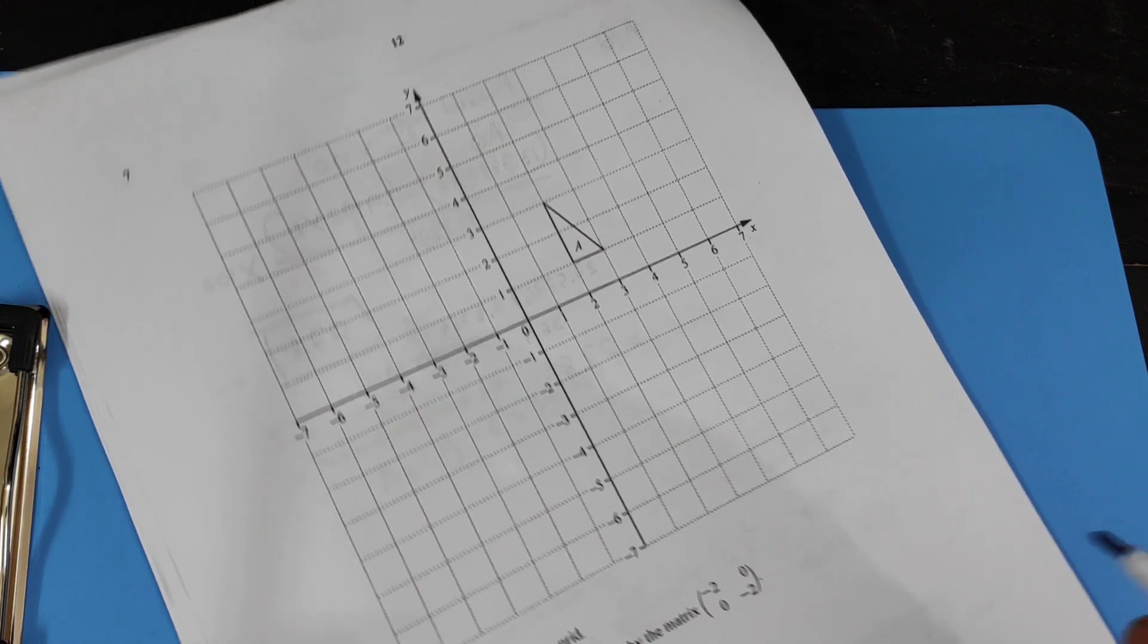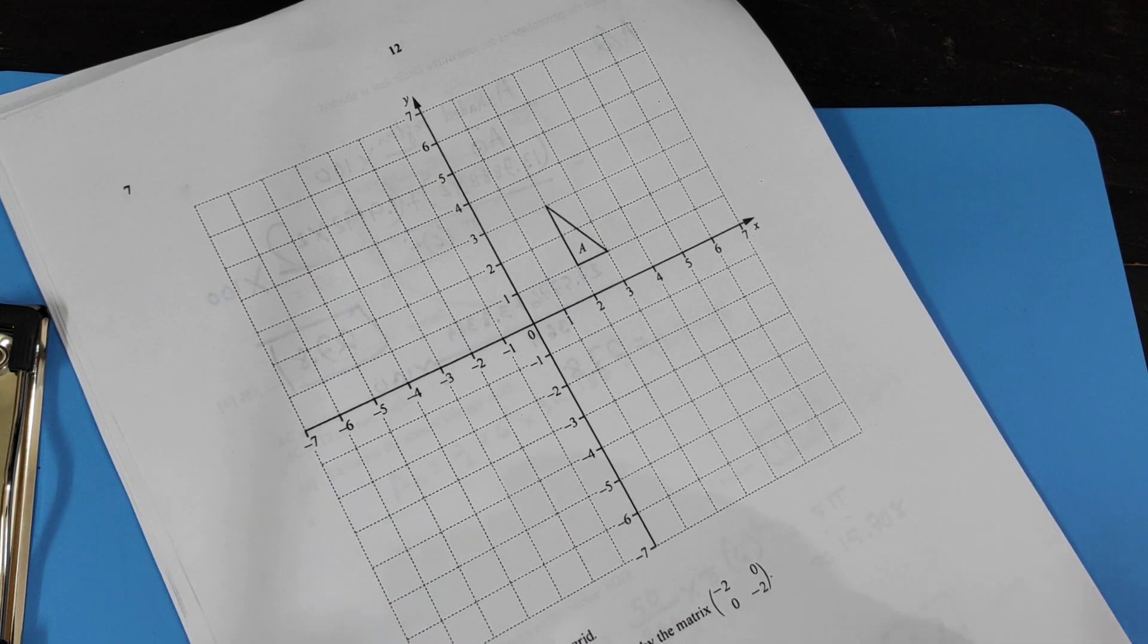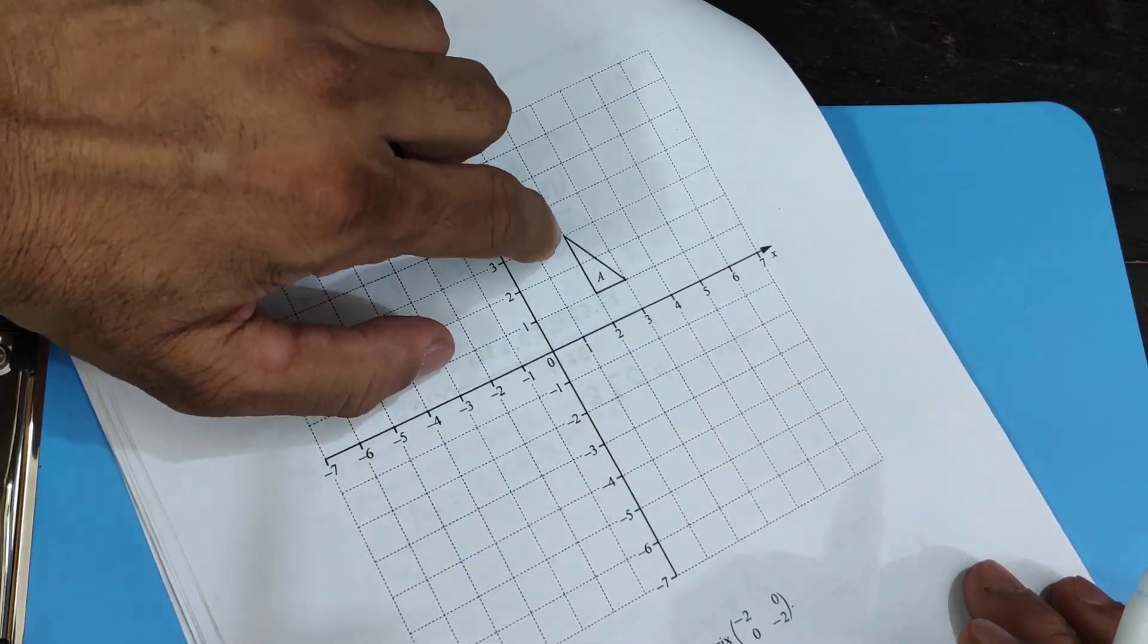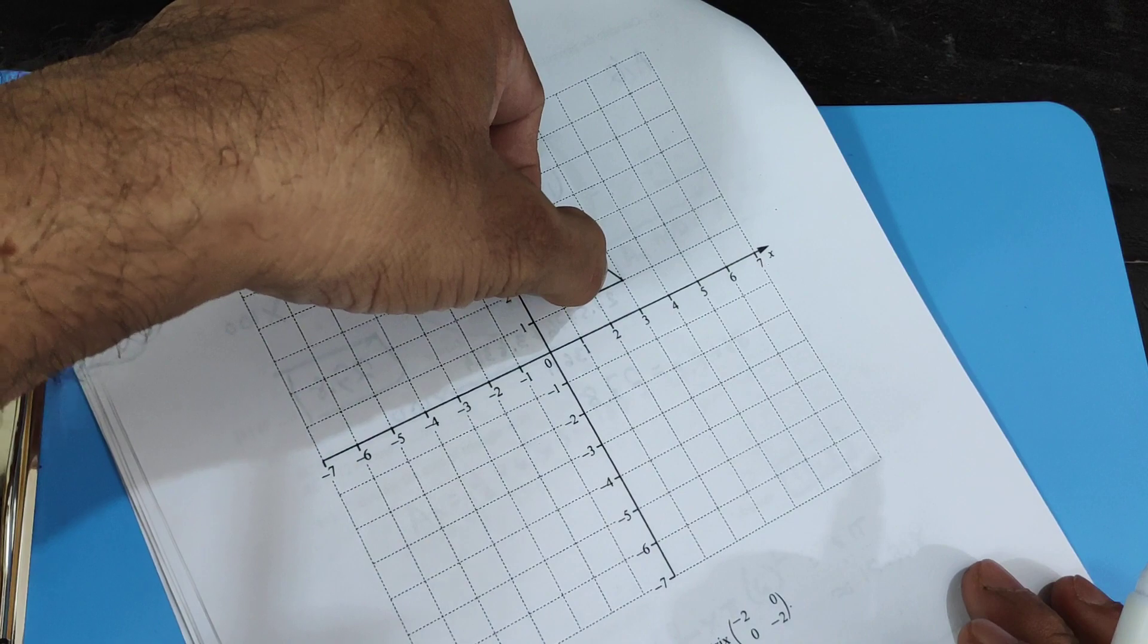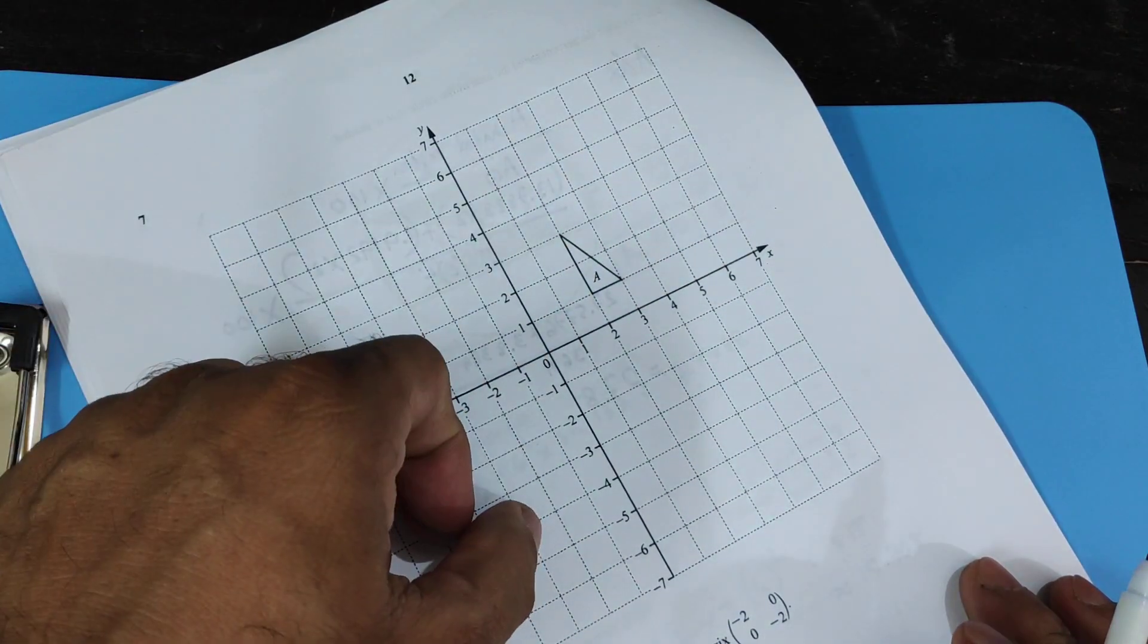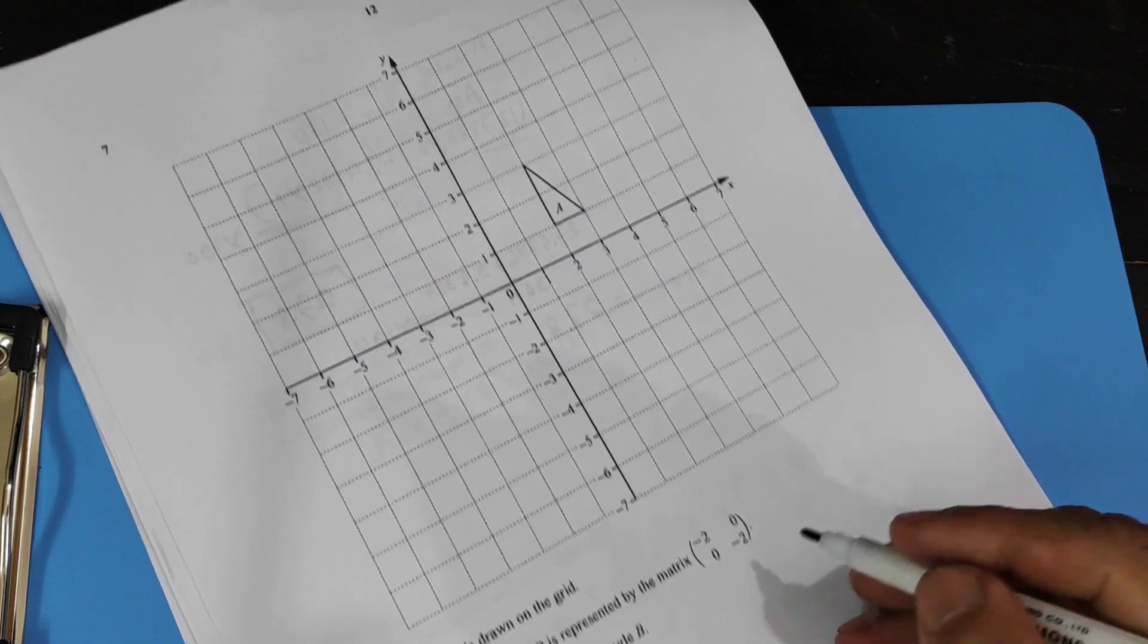Draw and label triangle B. There are so many ways you can do that. One of them is join each point, each of the vertices through this origin and extend it. Or what can you do?